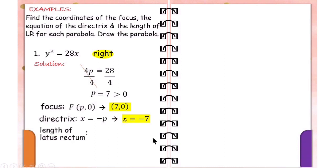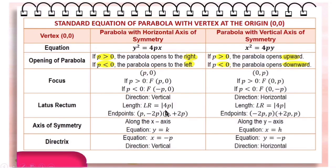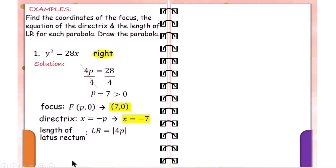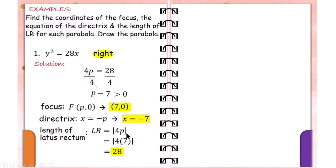Next, let us find the length of the latus rectum. The length of the latus rectum — whether the parabola opens right, left, upward, or downward — is equal to the absolute value of 4p. So this is equal to the absolute value of 4 times 7, which is 28. Even if the value of p were negative, the length of the latus rectum would always be positive because we take the absolute value.